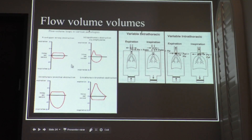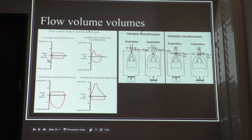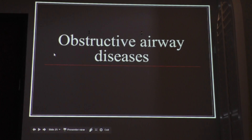The bottom line is that this is the likely graph you're going to get on your boards — you need to know this because it's very abnormal. This is consistent with a fixed upper airway obstruction, and this patient can die anytime.